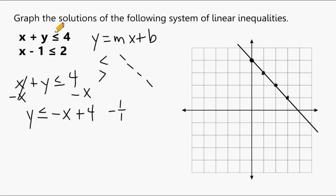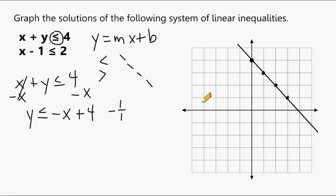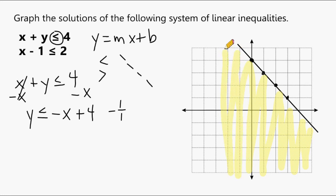Notice that our first inequality uses a less-than-or-equal-to symbol, meaning any point that is less than will be a solution. Anything above the line is greater, and anything below the line is less than. So any point that lies below this line is a possible solution for that inequality.